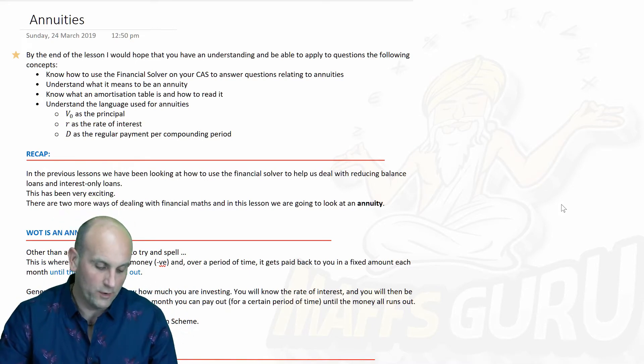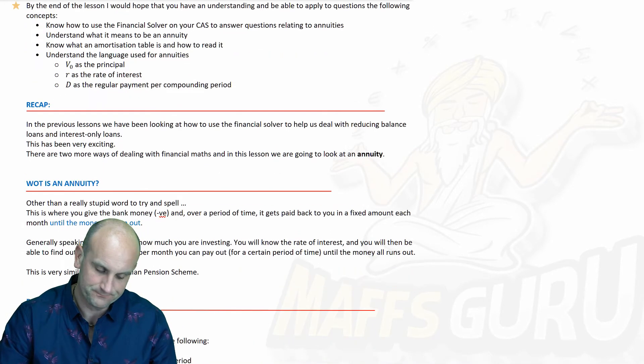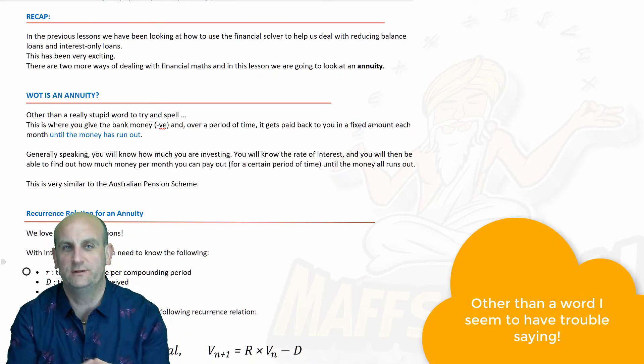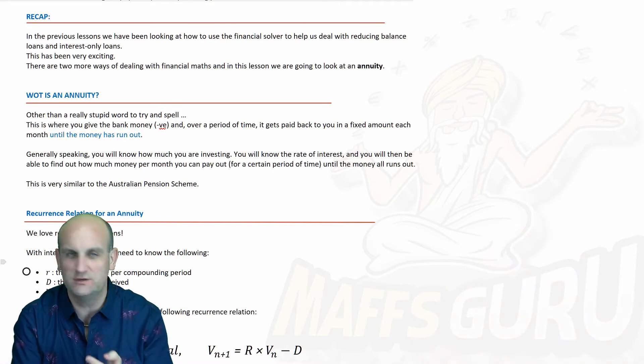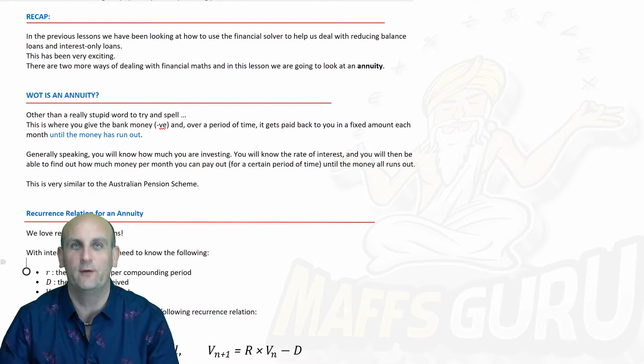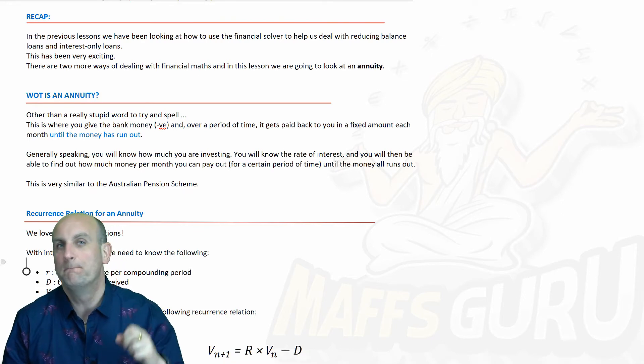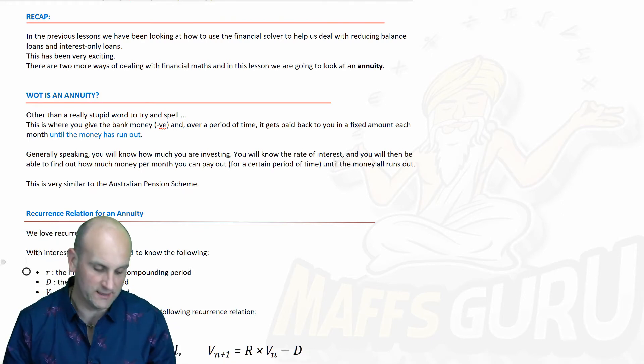Alright, what on earth is an annuity? Well, basically, this whole section, this whole course has been dealing with financial maths, with recursion, with reducing balance loans and interest-only loans. And then we get to this thing called annuities. Now, if you haven't watched the previous videos, I really would recommend you doing so. Not because I need the views, although that won't go amiss. It's because it builds on the use of a CAS calculator. And if you're not aware or know how to use your CAS calculator, this is going to be a little bit more tricky. Yes, you can do a lot of this by pencil and paper, but it makes life more complicated.